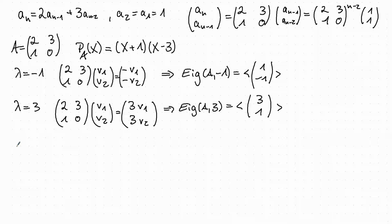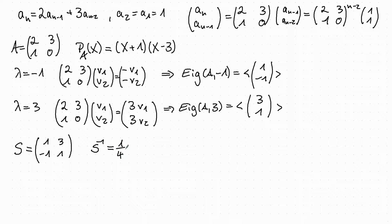Now we can find a base change matrix S where we put the eigenvectors into the columns. So S = [[1, 3],[-1, 1]]. We also compute the inverse of S, which is (1/4)·[[1, -3],[1, 1]]. Then S⁻¹·A·S is a diagonal matrix where the diagonal entries are the corresponding eigenvalues for those eigenvectors.